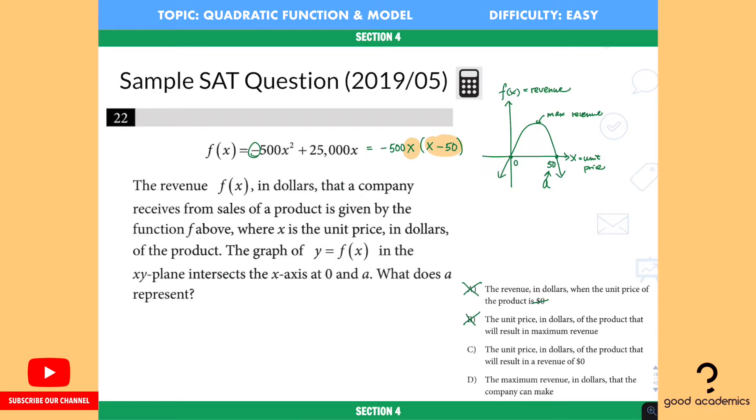D says the maximum revenue in dollars that the company can make, and again we said that the maximum revenue is going to be at $25, not at $50. So D is also wrong. So you finish your job, you pick the right answer, and also you prove how the other three choices are wrong, and this is how we would get this question right.